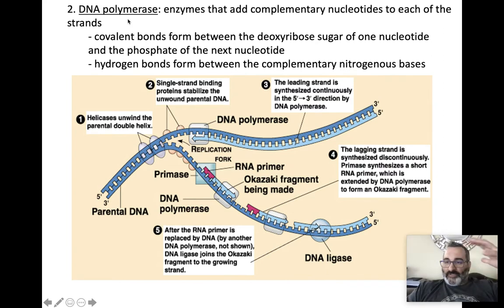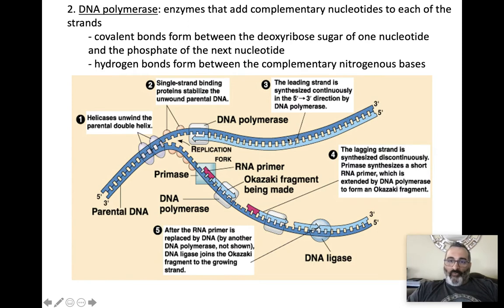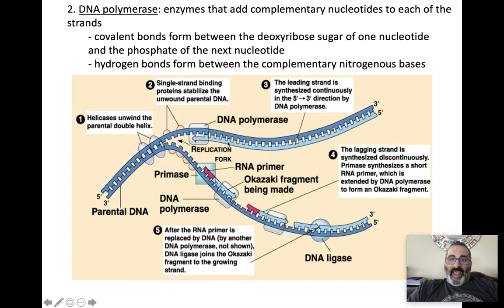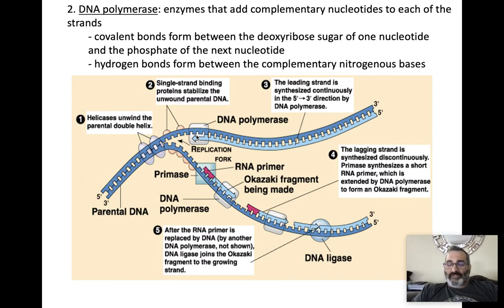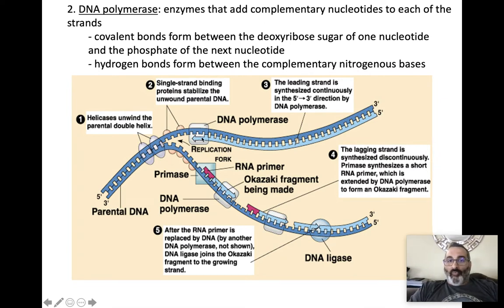DNA polymerase is an enzyme that attaches and moves along the exposed bases. As it moves along, DNA polymerase adds complementary nucleotides: if there was an A, it added a T; if a T, it added an A; if a C, it added a G; if a G, it added a C. It moves along continuously adding nucleotides according to the base pairing rules, creating the complementary strand of DNA. Hydrogen bonds form, building that second strand.